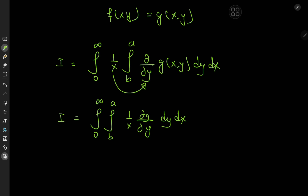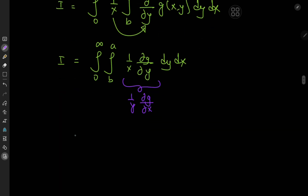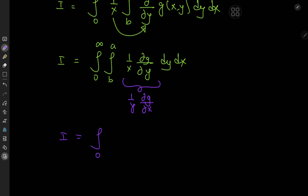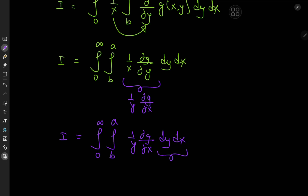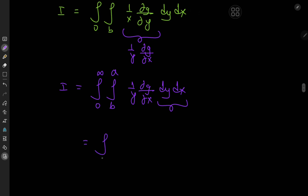Now we make use of that result we just derived: (1/x)(∂g/∂y) = (1/y)(∂g/∂x). So i equals the integral from 0 to infinity, integral from b to a of (1/y)(∂g/∂x) dy dx. Since we know the integral converges, we switch the order of integration and write this as the integral from b to a, integral from 0 to infinity of (1/y)(∂g/∂x) dx dy.